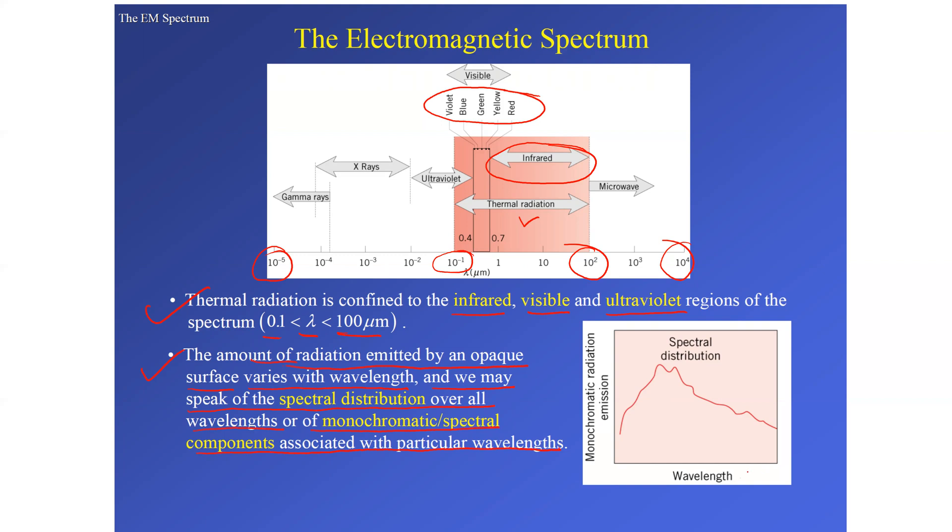We may speak of spectral distribution over all wavelengths or of monochromatic or spectral components associated with particular wavelengths. You can see here this is the wavelength lambda. It is varying and this is how the monochromatic irradiation is varying. We will discuss about the monochromatic and irradiation terms later on in the next few lectures.